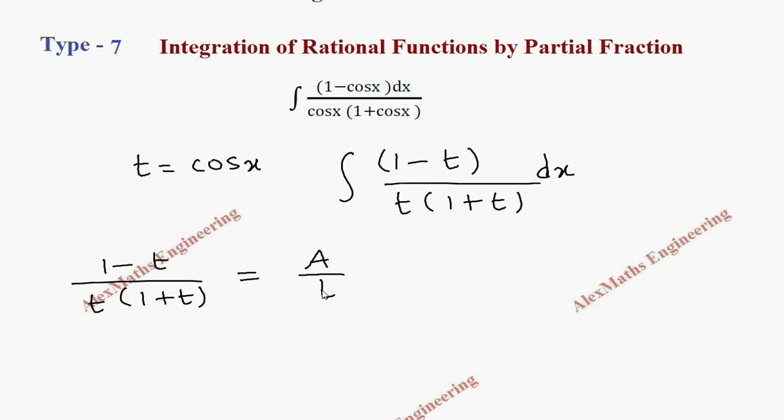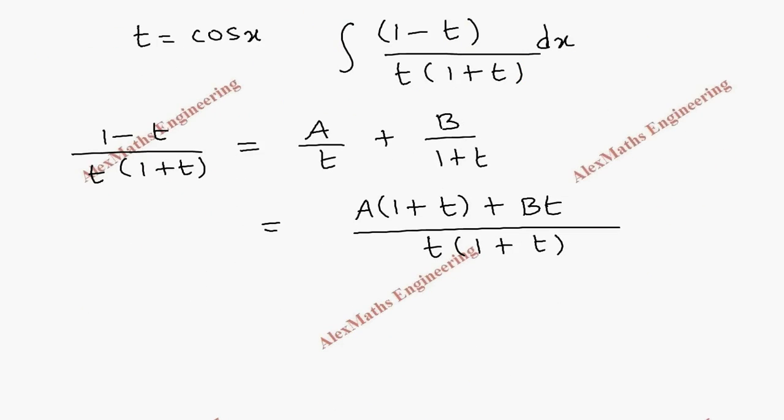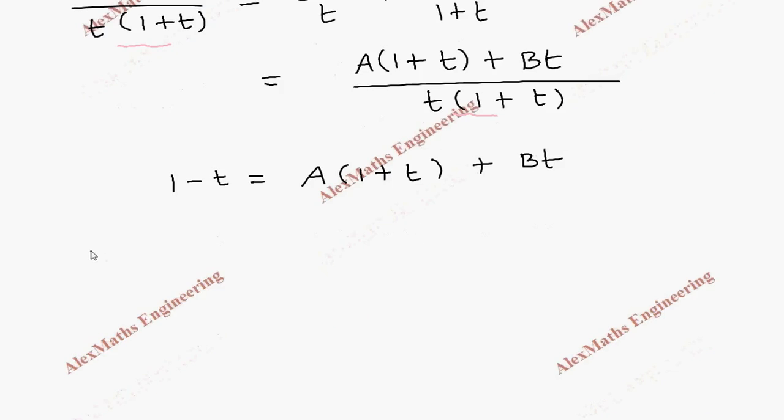So A by t and B by 1 plus t. Then we have to take LCM. LCM is t into 1 plus t, so this will become A into 1 plus t plus B into t. Now we are going to equate both the numerators, as both side denominators are the same. So 1 minus t equals A into 1 plus t plus Bt.